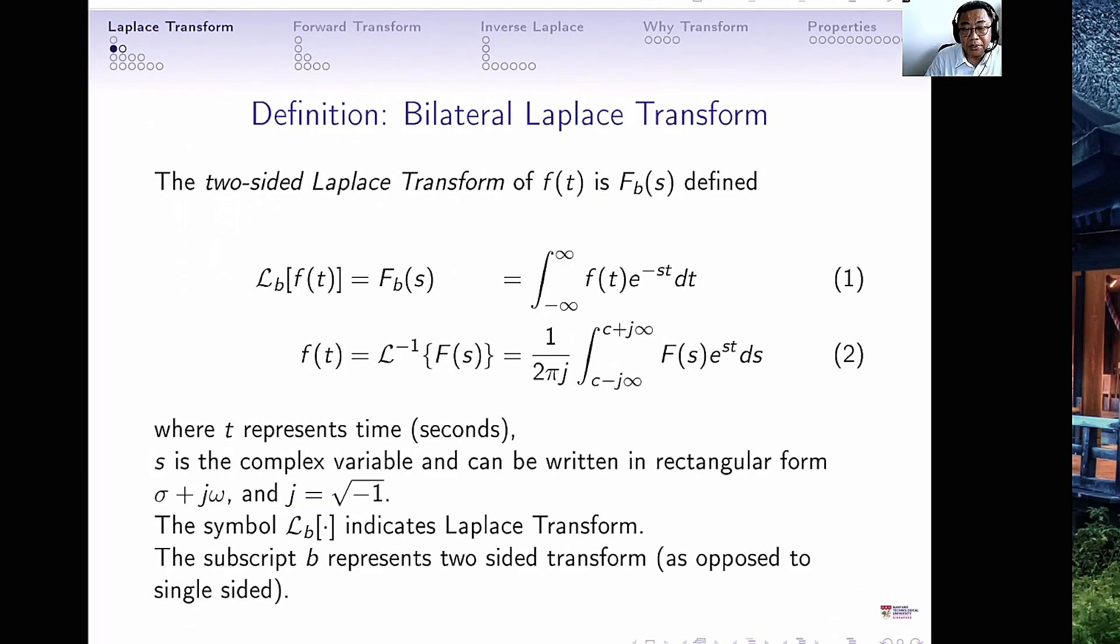We first begin with the definition of the bilateral Laplace transform. The bilateral is sometimes also called the two-sided Laplace transform. It takes the signal f(t), where t is continuous time. f(t) is a function of time, and it converts it into capital F(s), where s is the Laplace transform variable. And here the little b stands for the bilateral transform.